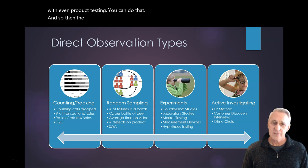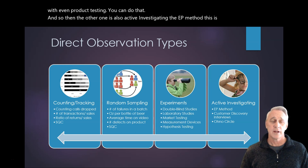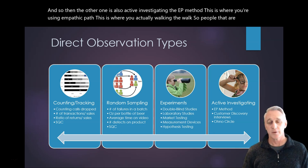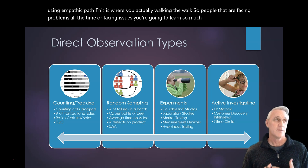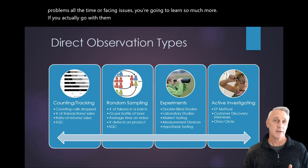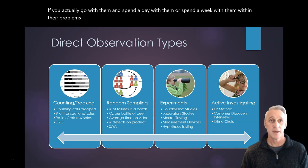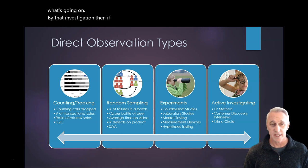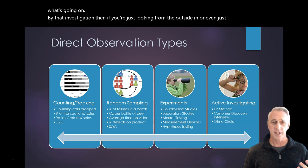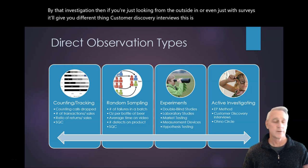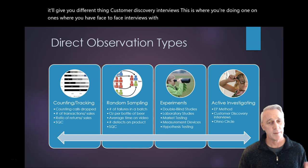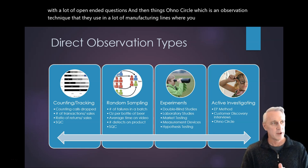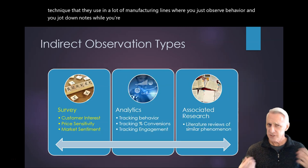And so then the other one is also active investigating. The EP method, this is where you're using an empathic path. This is where you're actually walking the walk. So people that are facing problems all the time or facing issues, you're going to learn so much more if you actually go with them and spend a day with them or spend a week with them within their problems and what they're dealing with. You're going to more intuitively understand what's going on by that investigation than if you're just looking from the outside in or even just with surveys. Customer discovery interviews, this is where you're doing one-on-ones where you have face-to-face interviews with people and getting their feedback on things with a lot of open-ended questions. And then things like Ono Circle, which is an observation technique that they use in a lot of manufacturing lines where you just observe behavior and you jot down notes while you're at it.